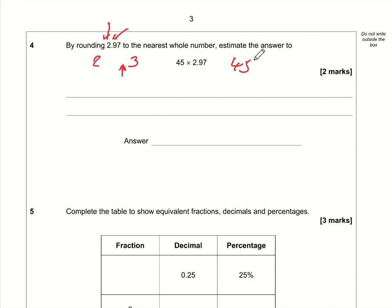So now we just need to do 45 multiplied by three. We might need to use a column here. So three times five is 15, five carry one. Three times four is 12 plus one is 13. So the answer is 135.